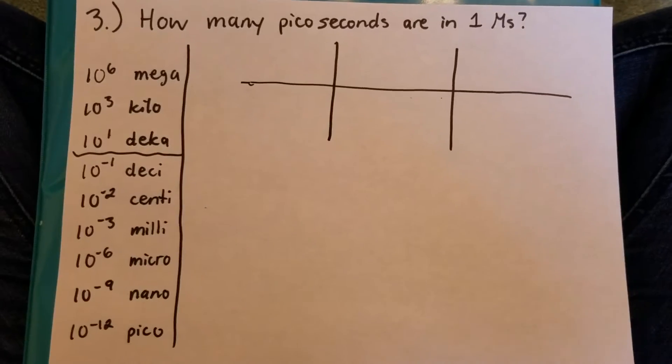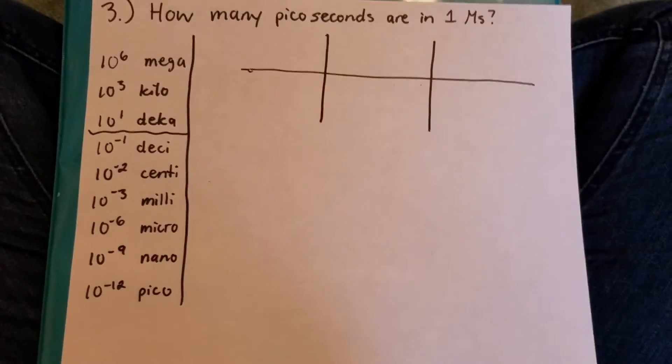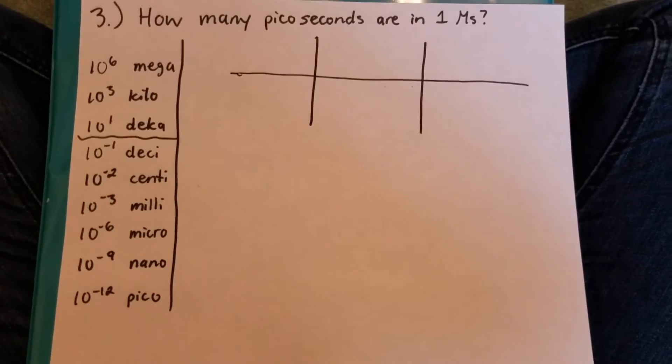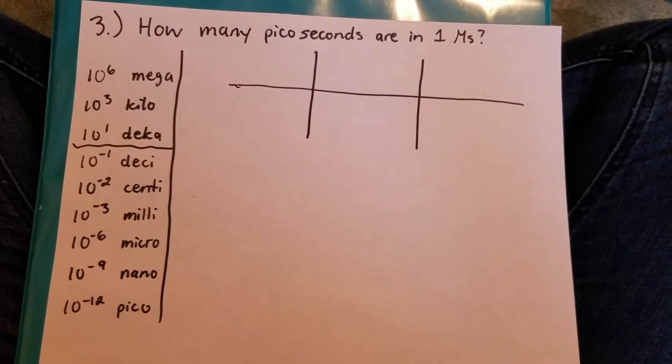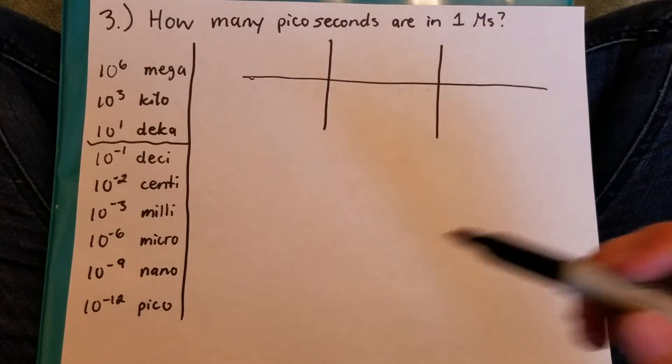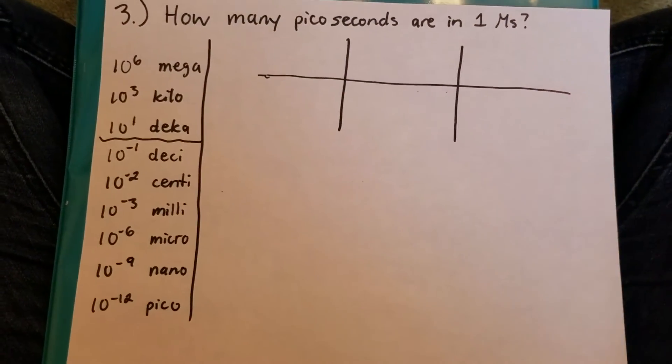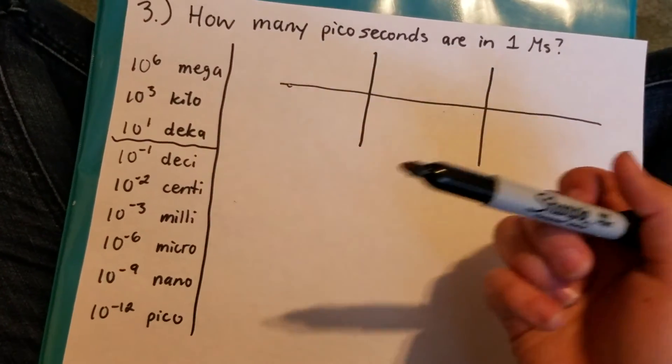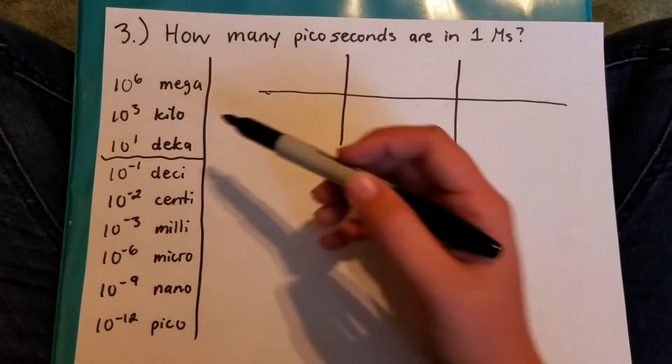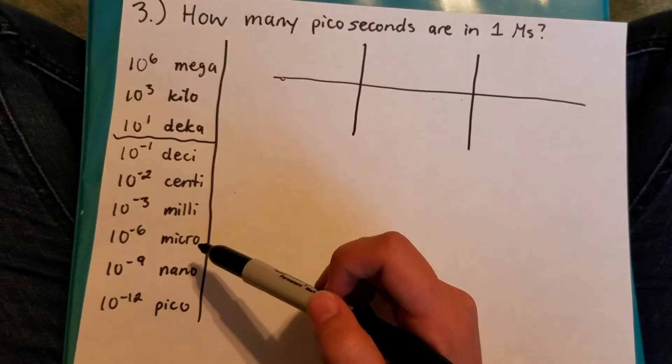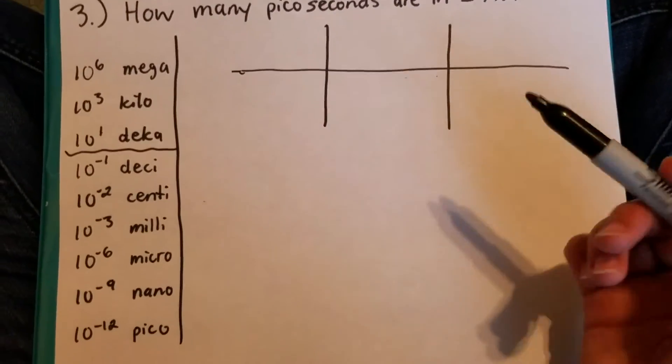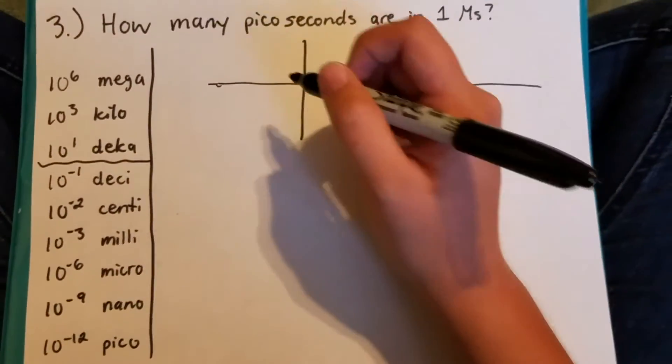I decided to use an example from the math packet that we got in class. The question is how many picoseconds are in 1 megasecond? You probably have never heard of picoseconds or megaseconds before but that's okay because we're given the prefixes in the chart. These aren't all of them. The rest of them are in the chart in the packet. But you'll need to go from mega to base which is in between the positive and negative numbers and down to pico. So since I'm given megaseconds that's what I start with.